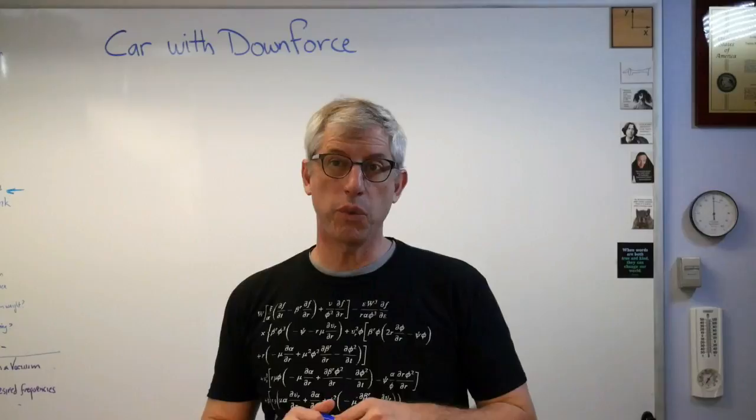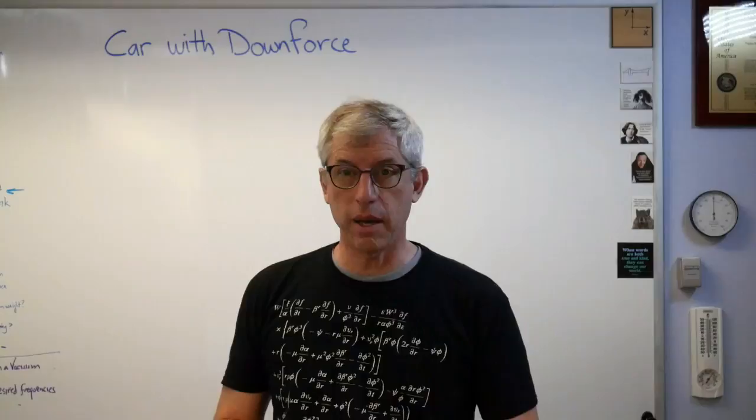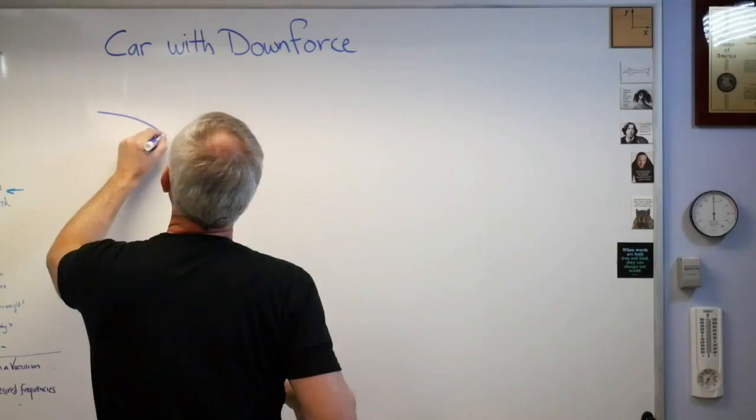Hey scholars, good to be back with you. Today I'd like to talk about what happens when a car goes around a turn and the car has a wing on it, so it's got aerodynamic downforce.